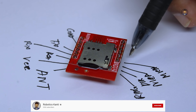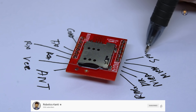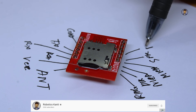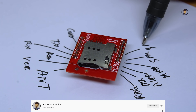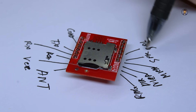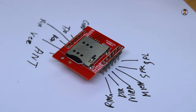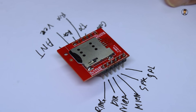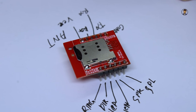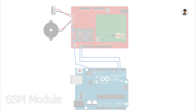तो MICP का पीन है, उसके बाद जो पीन होगा वो होगा MICN। ठीक है, और इसके बाद speaker के लिए connection होगा। उसके बाद जो पीन है वो भी speaker के लिए, ठीक है। तो speaker के left, right के लिए हम लोग को ये connection करना होगा। इस तरह हम लोग इसका connection कर सकते हैं। तो अभी चलिए, इसके मदद से जो circuit हमने बनाया है, वो आज हम लोग किस प्रकार से बना सकते हैं, आसानी से वो सीखते हैं।